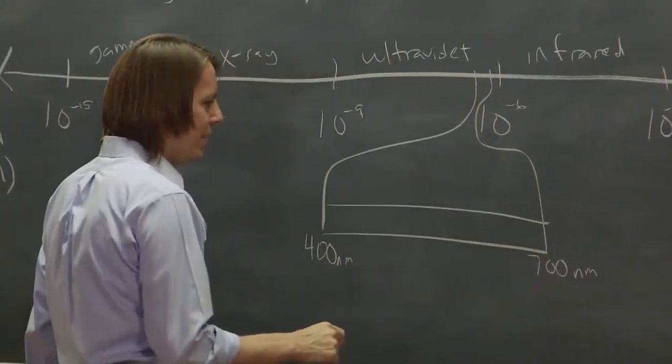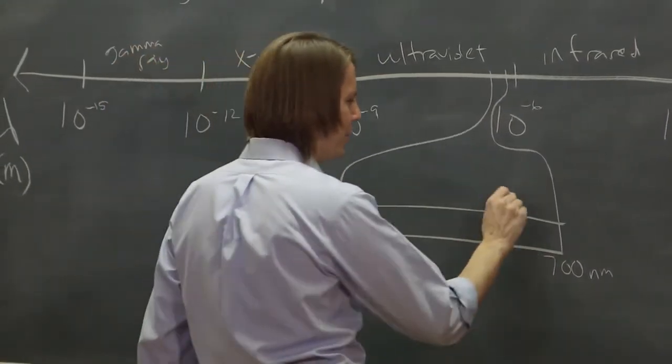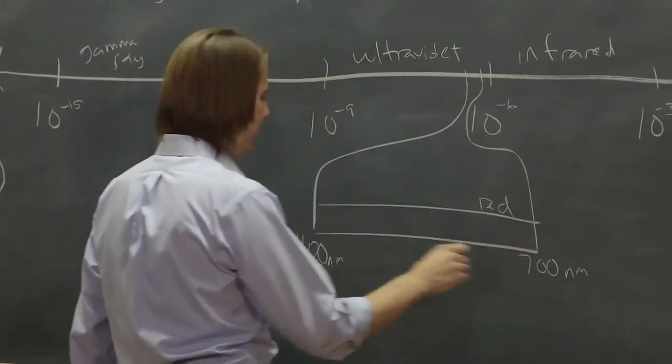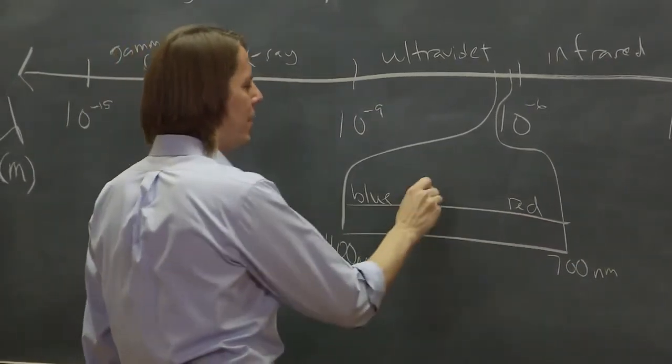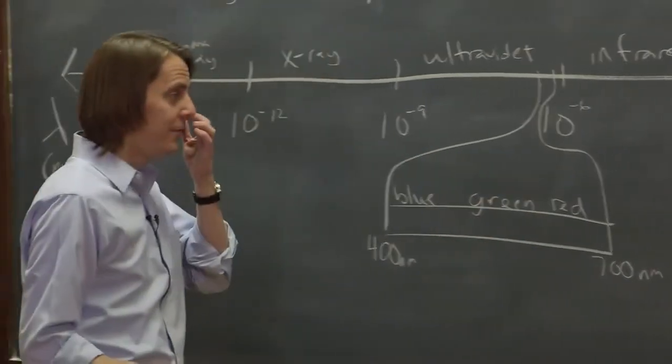If you want to look at the colors in it, it's ROYGBIV, but it's backwards. So we got the reds over here near 700 and the blues and the violets over here and green kind of in the middle around 550.